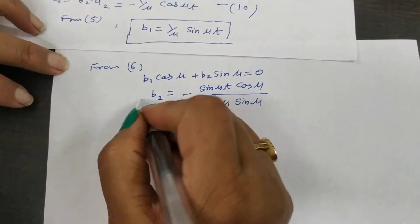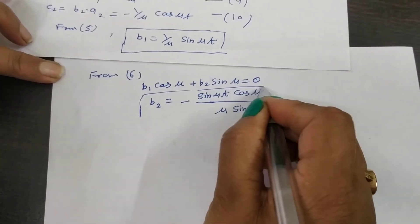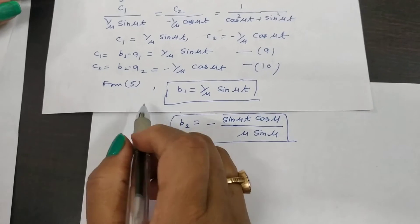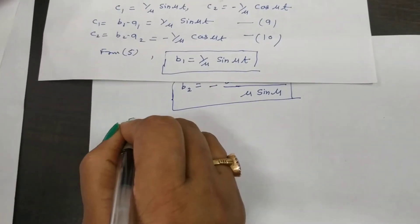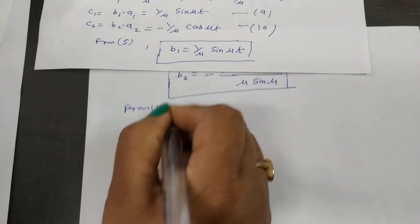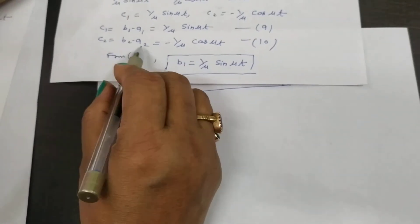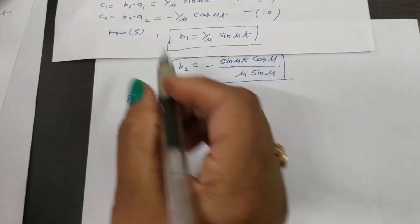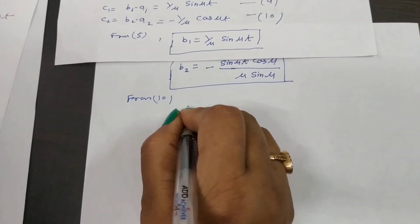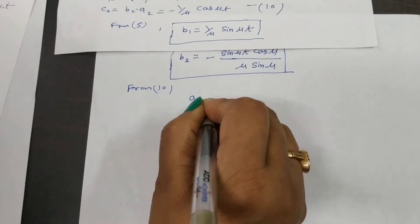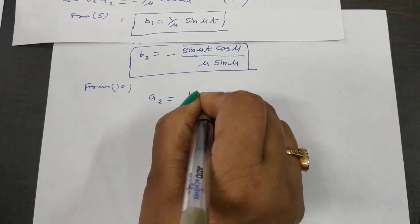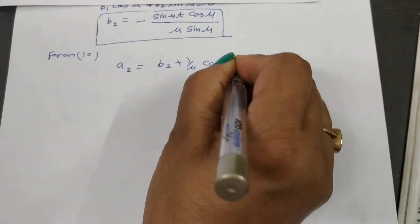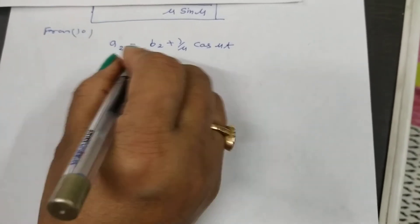So you get the value of b2. Now find the value of a2 from equation number 10. From equation 10, a2 minus b2 equals this expression. Substituting the value of b2 into equation 10 you get a2. a2 is equal to b2 plus (1/μ)cos(μt).